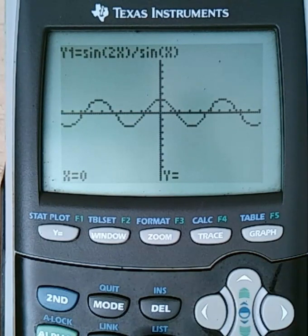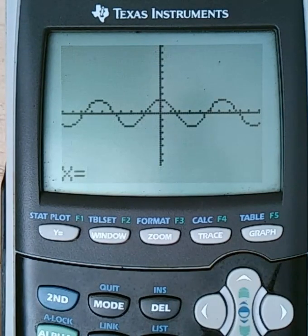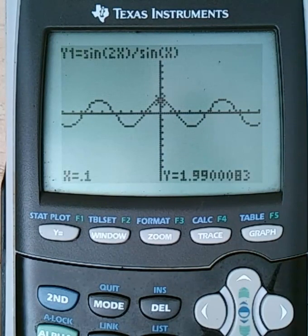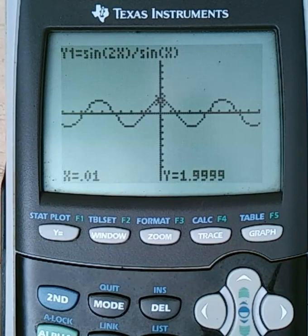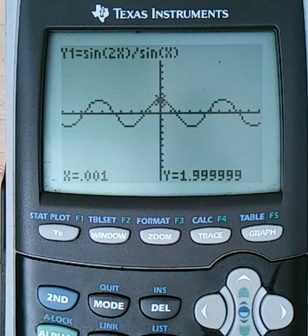So I want to take the limit as x approaches 0. And I want to do this by table again. So I'm going to go second, calculate, value. And I want to get numbers really close to 0. So I'm going to try 0.1. And I get 1.99. 0.01, 1.9999. And 0.001, these look like they're tending towards y equals 2.